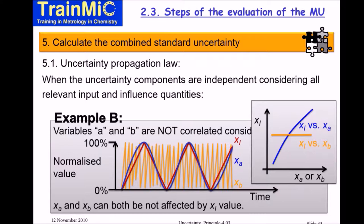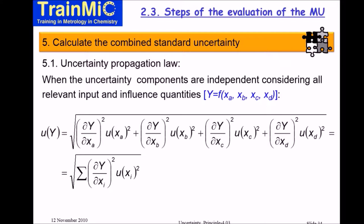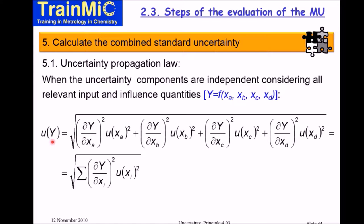And that equation is the uncertainty propagation law. When this equation is presented, people sometimes find the mathematical notation difficult, but there is no reason for this. The uncertainty propagation law is an equation used to estimate the combined uncertainty associated with the final result. It is applicable when you have a function of variables A, B, C, and D that will affect the Y value.